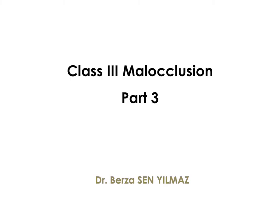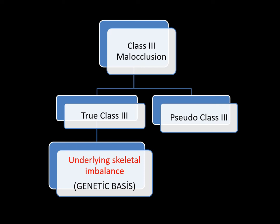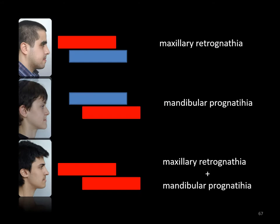Class 3 Occlusion, Part 3. In this part of the webinar, we will discuss treatment modalities related to true Class 3. One should remember that there is always an underlying skeletal imbalance when true Class 3 is mentioned. Class 3 occlusion can result from pure mandibular prognathism, maxillary hypoplasia, or a combination of the two.